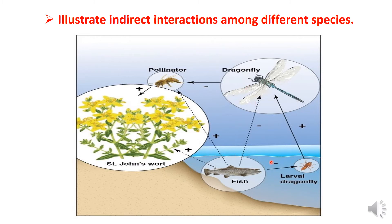This is a pond ecosystem. In the pond, there are fish — very big fish. The fish eat the larval dragonfly at its larval stage. This controls the dragonfly population. So a small number of larvae leads to a smaller dragonfly population.